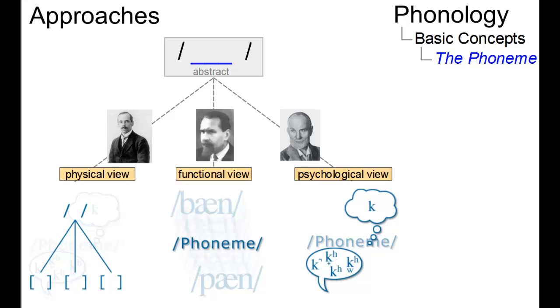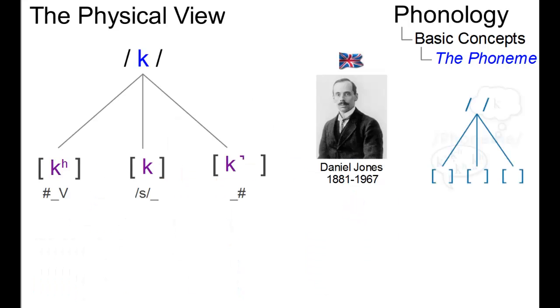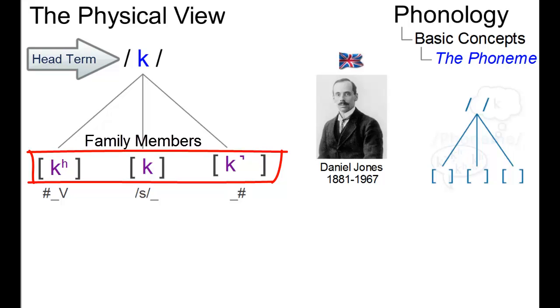There are three ways in which to consider the phoneme today. The physical or phonetic view of the phoneme goes back to Daniel Jones, who defined the phoneme as a head term of a family of speech sounds that satisfy two criteria: phonetic similarity and complementary distribution.